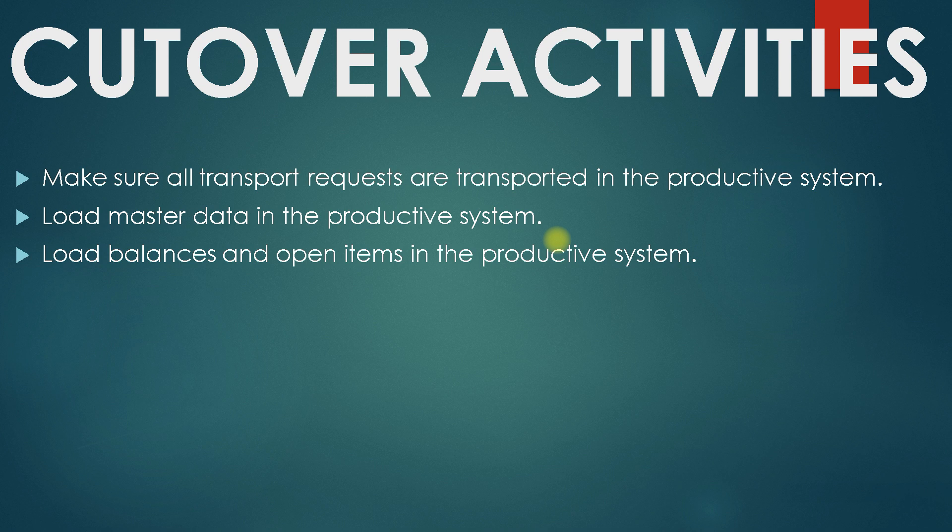Next is to load balances and open items in the productive system. That means whatever open documents you have — open PR, open PO, open GR, anything — you should load or transfer those items to your production system.